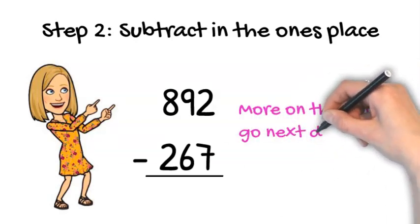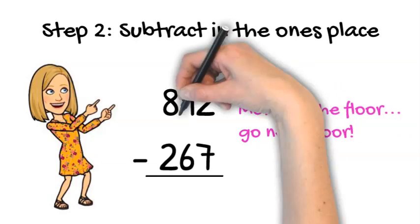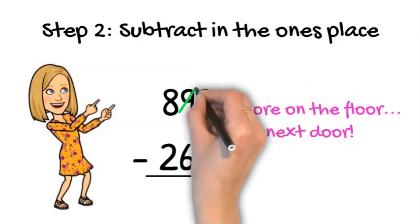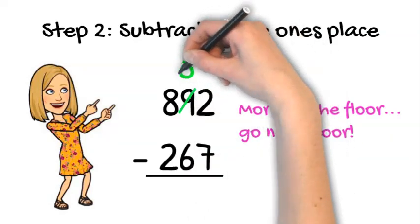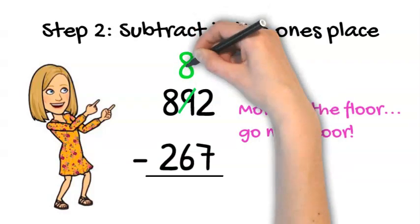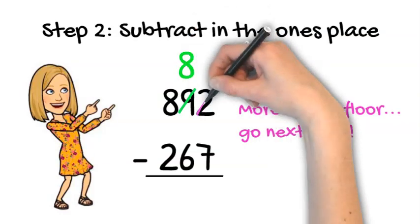So, since we live next door to Mr. Tens, we go over, we knock on his door. Hey Mr. Tens, can I have one? Oh, I have 9 ten sticks. I can share one with you. So if it gives us one, 9 take away 1 is 8. So we make sure to write that 8 on top, so we don't make a mistake.